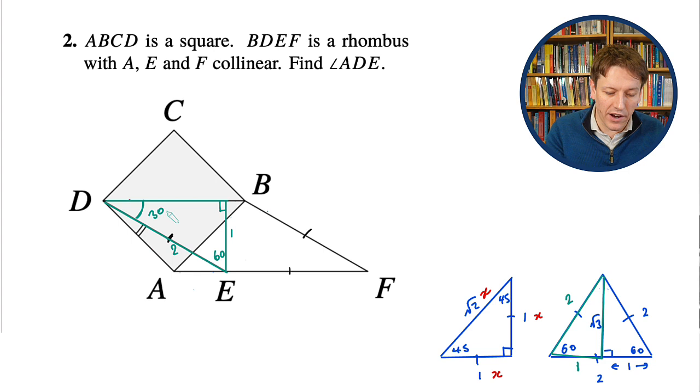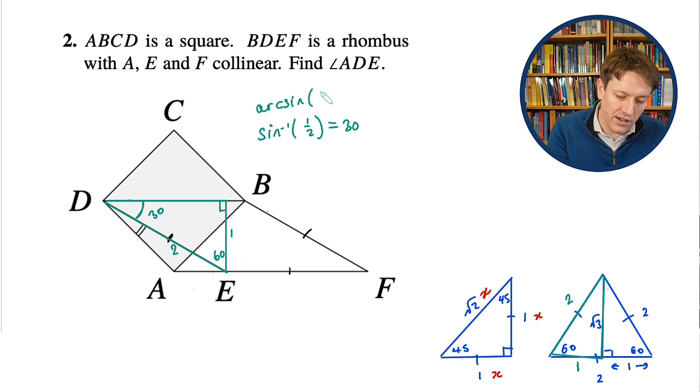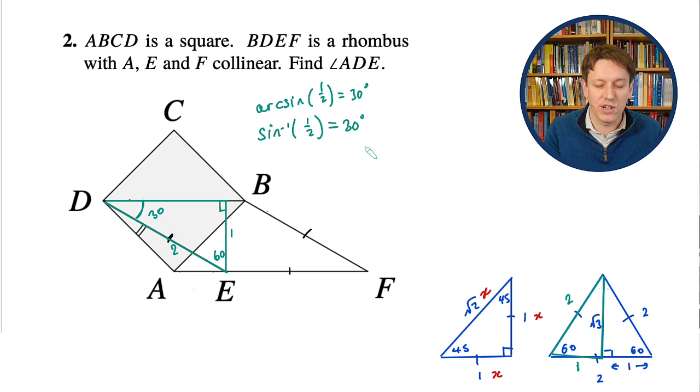Because of that relationship with sine and cosine, you could say that the inverse sine of one-half here is equal to 30 degrees, or if you want to say arc sine of one-half is 30 degrees, different notation, same result, or we could just refer to that equilateral triangle.